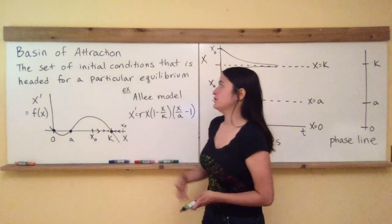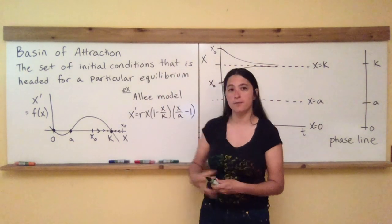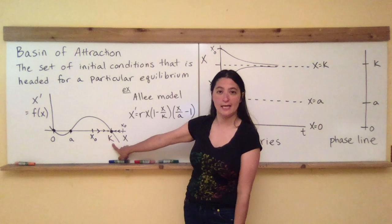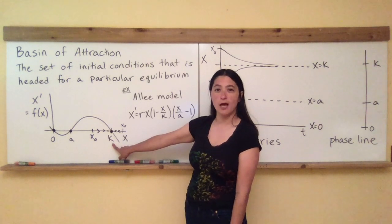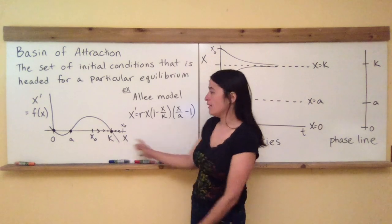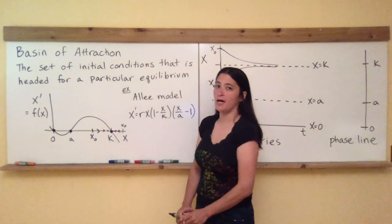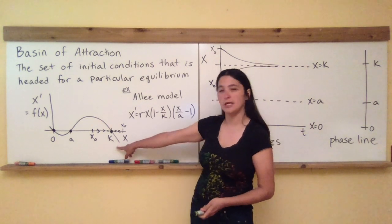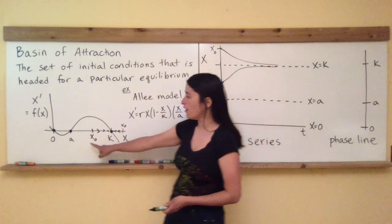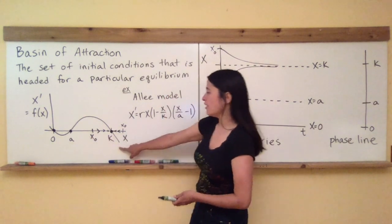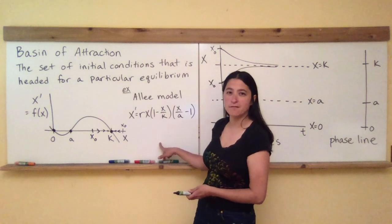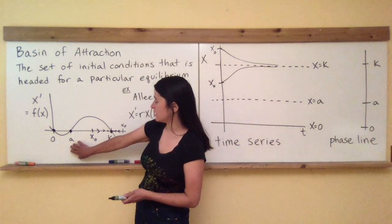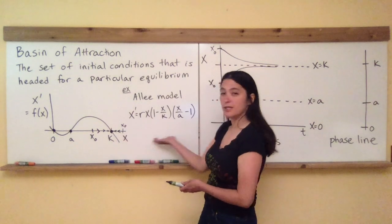So when I say the basin of attraction is the set of initial conditions headed for a particular equilibrium — for k, the carrying capacity — I want to describe the set of all initial conditions that are going to head toward k. All initial conditions between a and k, and all initial conditions greater than k, are headed there. So the basin of attraction for k is all initial conditions greater than a — those are all going to be headed for k.